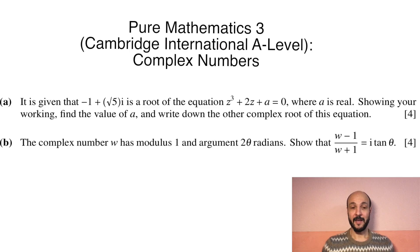We'll start as normal by reading through the question. Part (a): It is given that -1 + √5i is a root of the equation z³ + 2z + a = 0, where a is real. Showing your working, find the value of a and write down the other complex root of this equation.